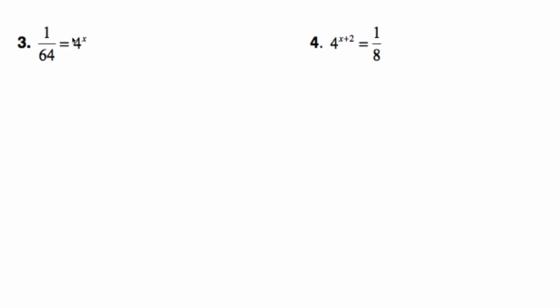All right, now getting to a more challenging problem, I now have 1 over 64 equal to 4 to the x. Well, I need to make a common base of some kind. And so what I recognize is that this is 1 over 4 to the power of 3. 64 is 4 to the power of 3, which is 4x. If I rewrite this again, I pull the 4 to the top. This is 4 to the negative 3 is equal to 4 to the x. Well, now I know that x must be negative 3. And so you have to be aware of your exponents and what all these calculations are.